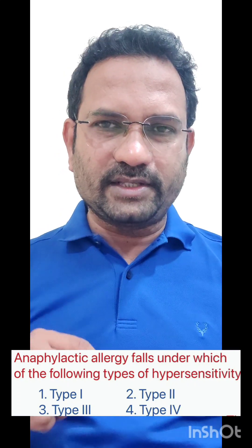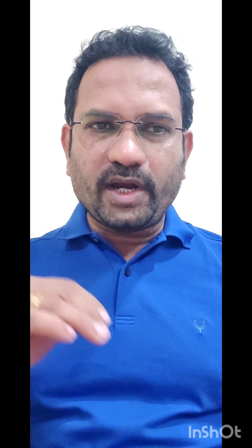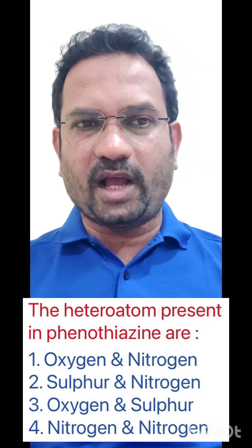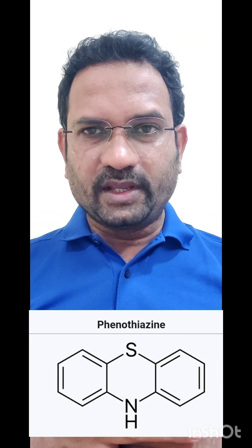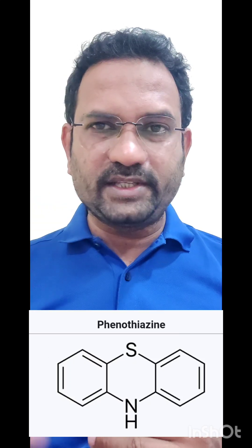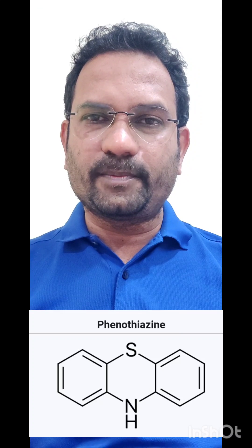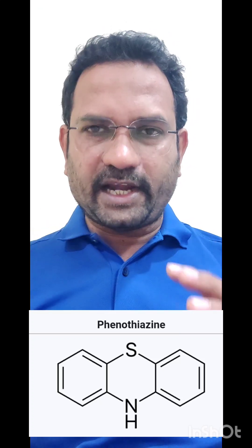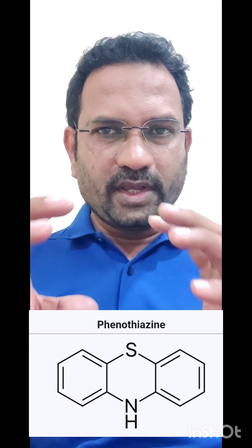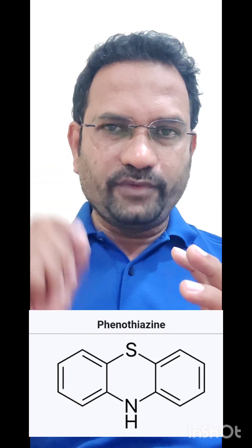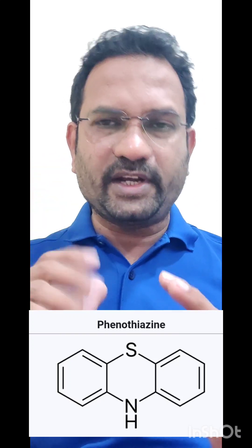Now let us look at the third question. The heteroatom present in phenothiazine are — phenothiazine is a very popular heterocyclic ring widely used to treat psychosis or schizophrenia. Chlorpromazine, thioridazine — all these azines belong to the phenothiazine group. They are made up of three rings: two phenyl rings and a center ring of six atoms, where at positions one and four, sulfur and nitrogen are present.